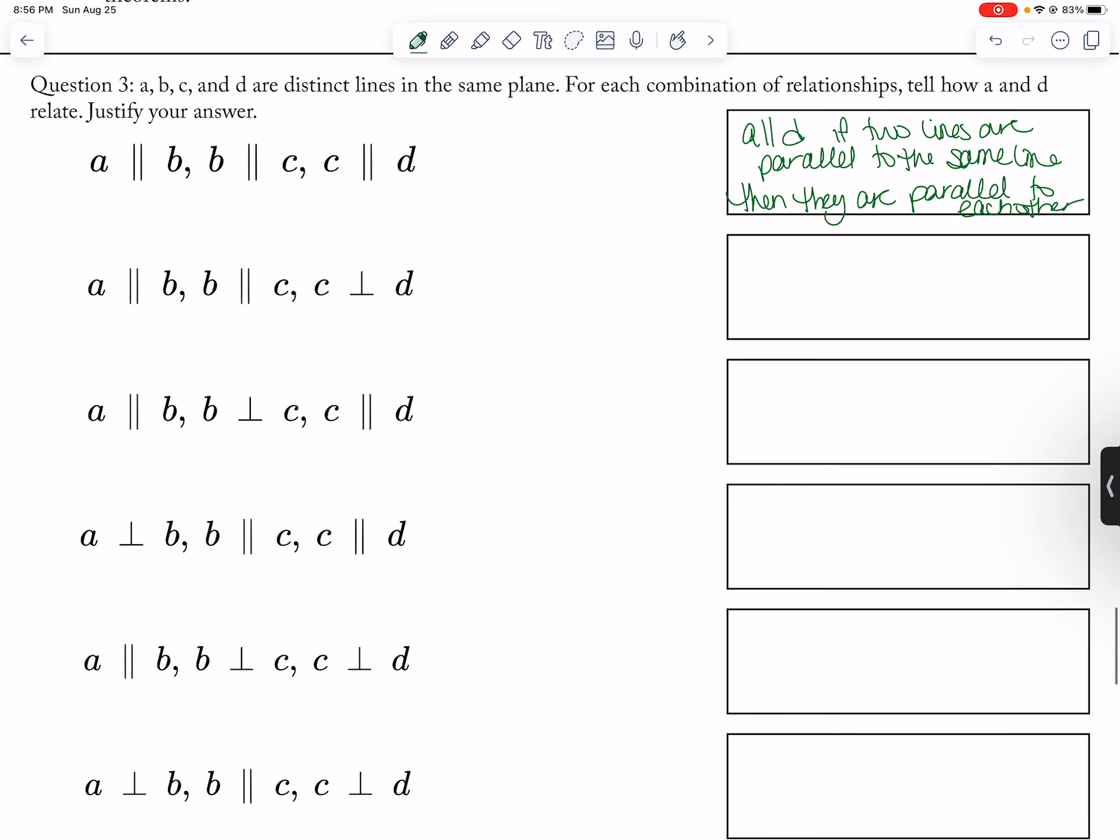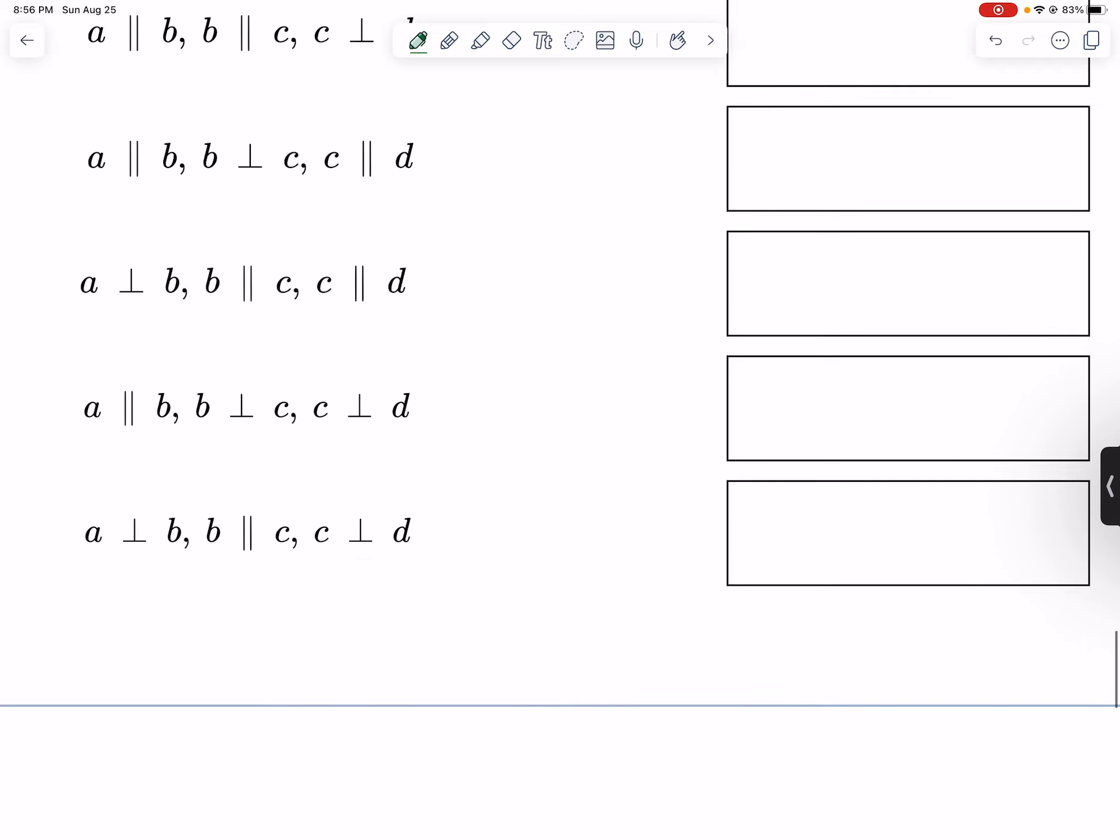But that's really what I'm trying to do is come up with some sort of conclusion for how A and D are related to each other. So like the third from the last one, this one here, A is perpendicular to D, because if two lines are perpendicular to the same line, then they are parallel to each other.